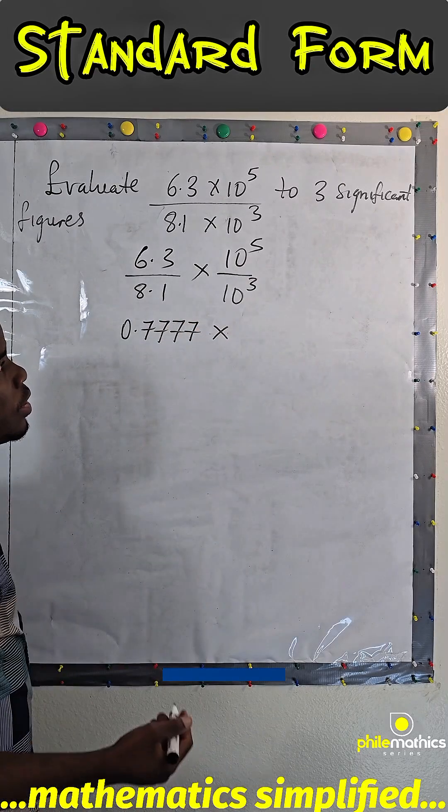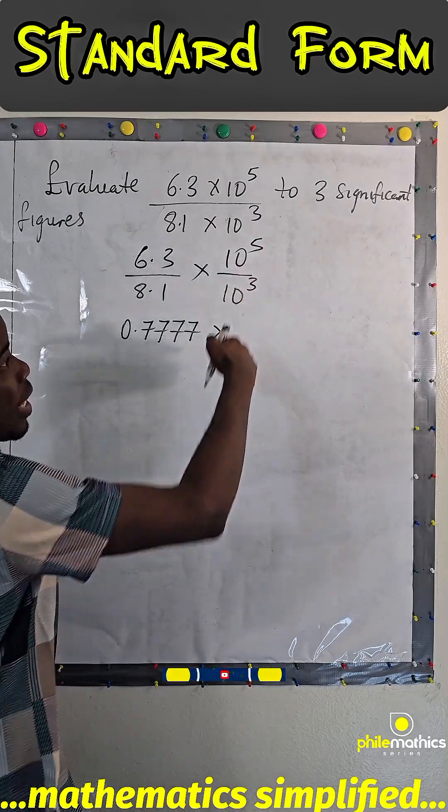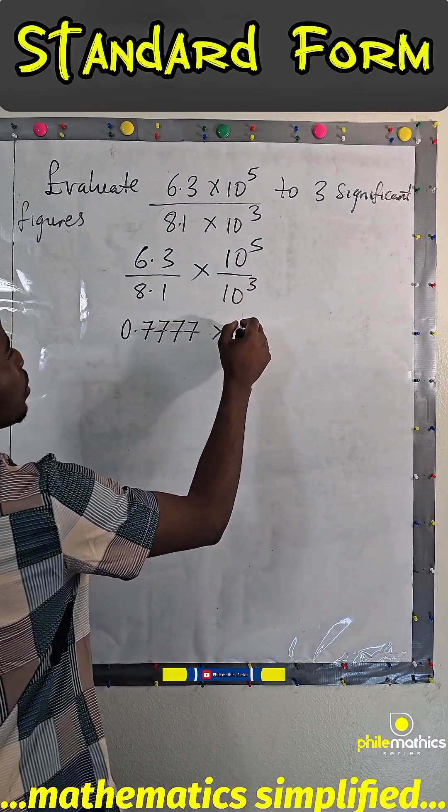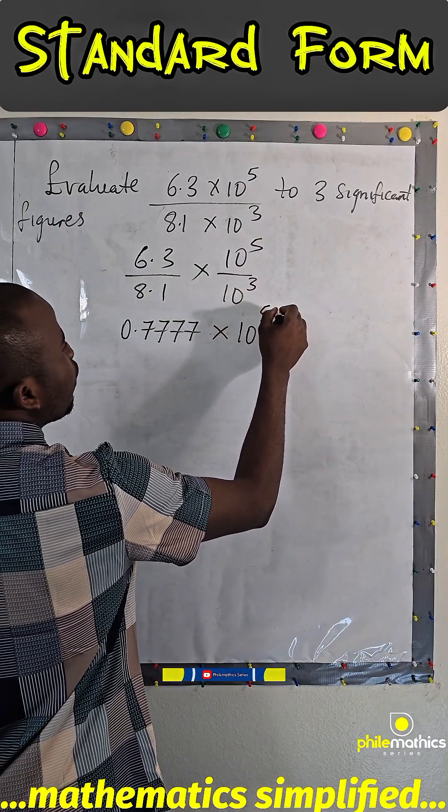And from laws of indices, since they are the same base and since we are dividing, we subtract the power. This would be 10 to the power of 5 minus 3.